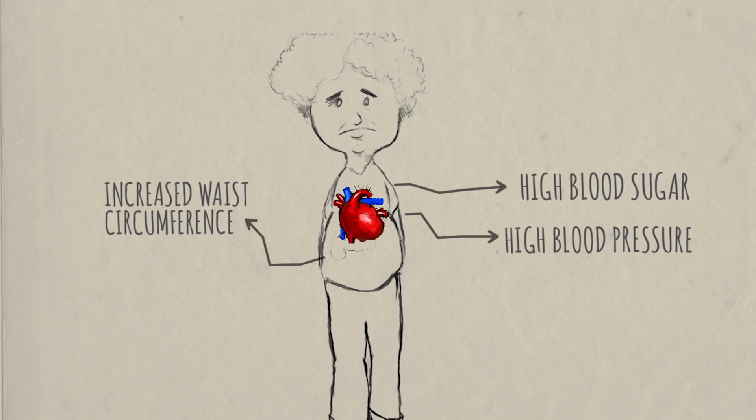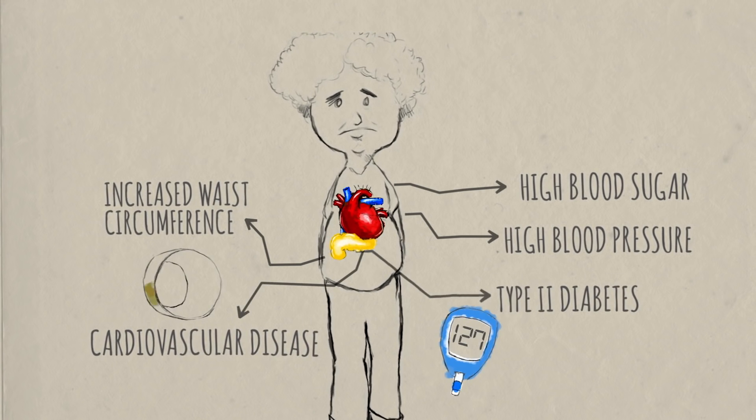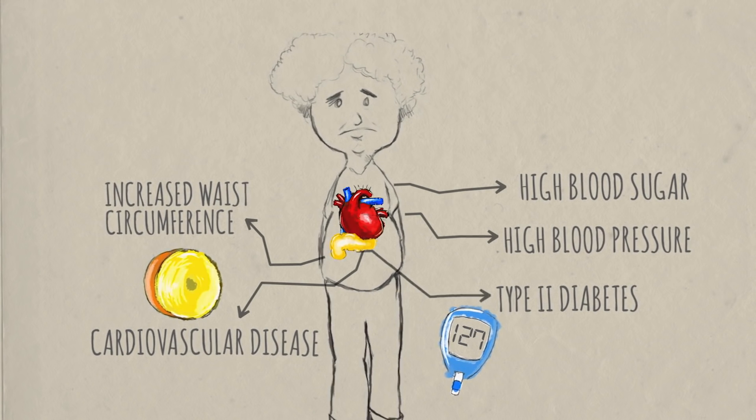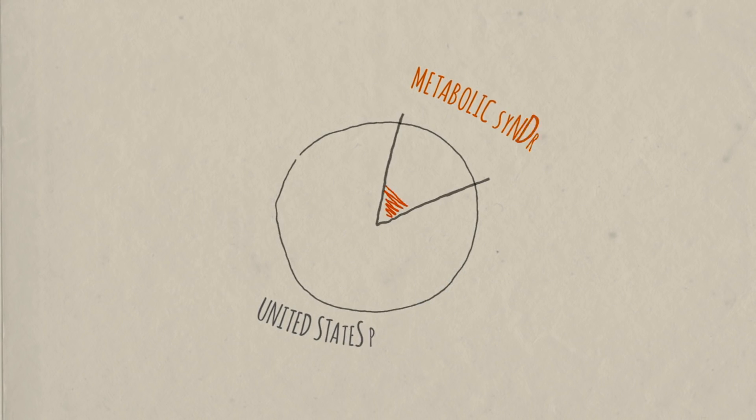It increases the risk of developing conditions like cardiovascular disease and type 2 diabetes, and its prevalence is rapidly increasing all over the world. As much as 32% of the population in the U.S. has metabolic syndrome.